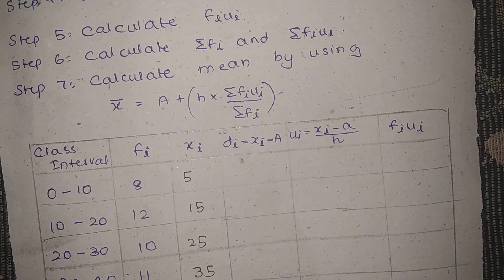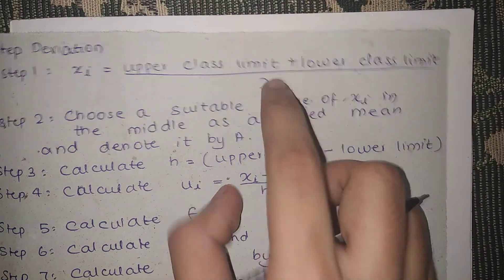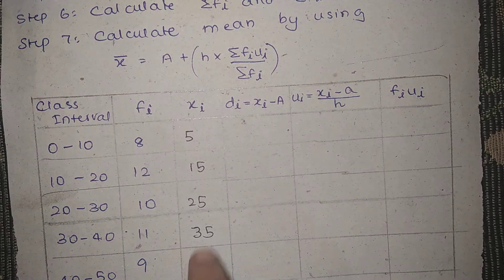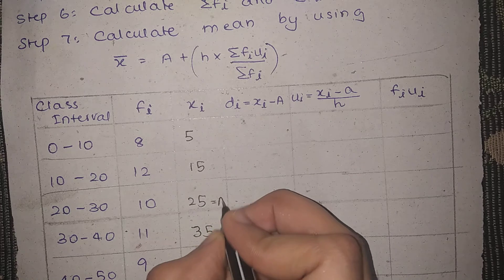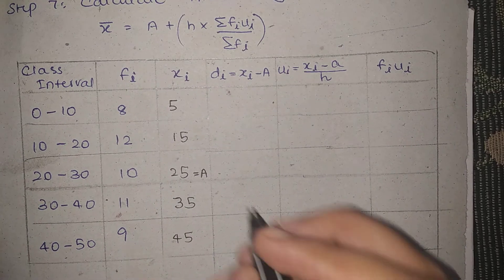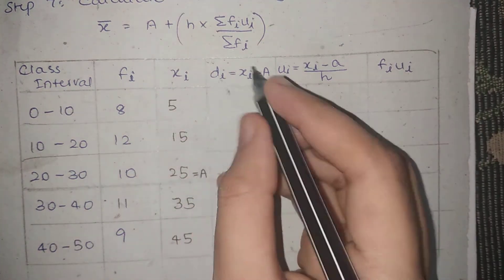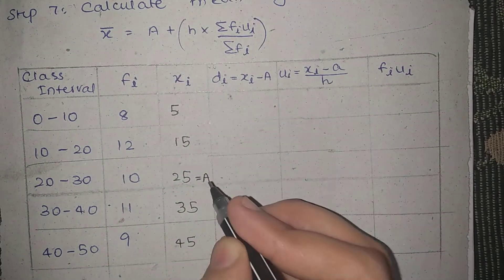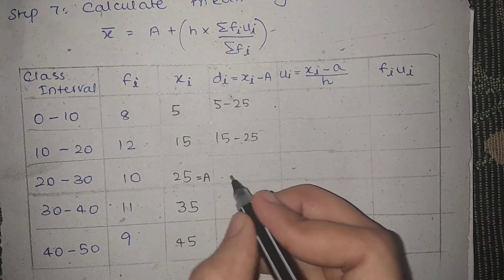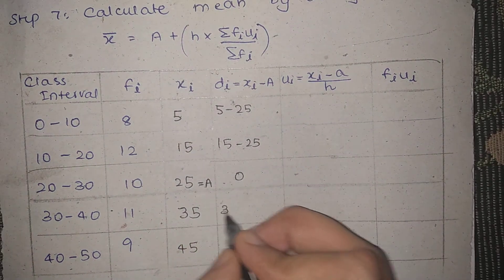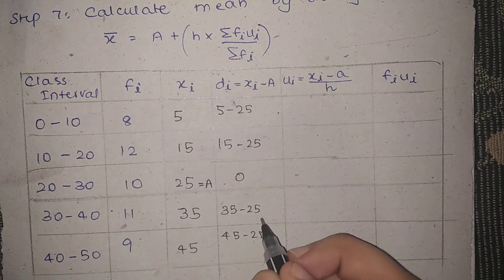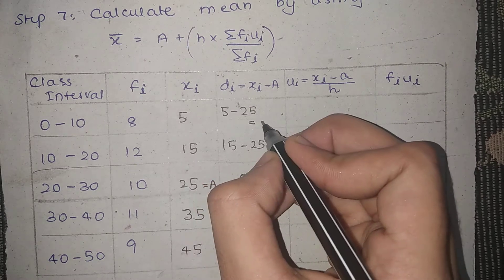The class mark is upper class limit plus lower class limit divided by 2. Now let's take the deviation. The deviation is xi minus a. I will assume a equals 25. So: 5 minus 25; 15 minus 25; 25 minus 25 equals 0; 35 minus 25; 45 minus 25. The answers are: minus 20, minus 10, 0.